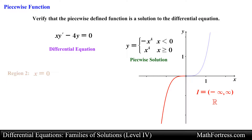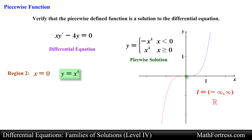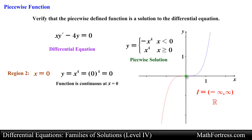Now we need to make sure that the piecewise function is a solution at exactly x equals 0. We first need to verify that the piecewise function is defined at x equals 0. Looking at the piecewise defined function, when x equals 0 it is defined by the function x raised to the power of 4. So we use this function to find the value of y, which ends up being equal to 0. This means the piecewise defined function is indeed defined and continuous at x equals 0.